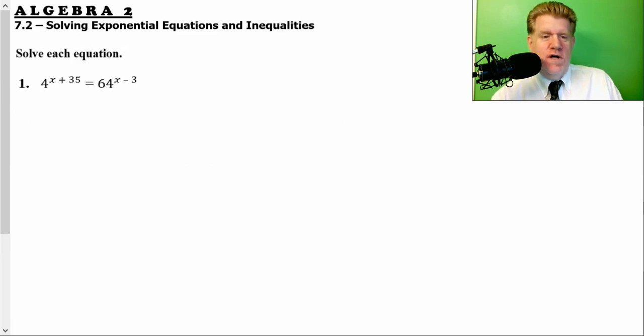Let's see what we got here. How do we solve an equation like this? 4 to the x plus 35 equals 64 to the x minus 3. Well, here's what we have to do for today. And every one of the problems today will work out this way. We have to have bases that are the same. When I say bases, our two bases here are 4 and 64. Well, they're not the same, so we can't compare them.